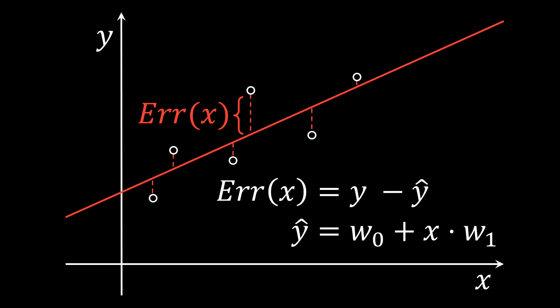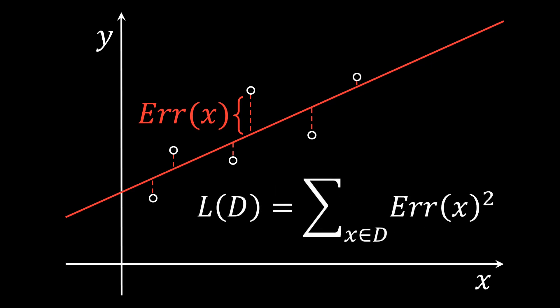In particular, for a given dataset D, we can define the squared error loss L as the sum over the squared error terms to get a measure of how bad a given approximation fits the data. Note that we take the squared error here to ensure that every error is always counted positively. We could take the absolute value of the error alternatively. However, the squared error is often preferred as it allows for a closed-form solution.